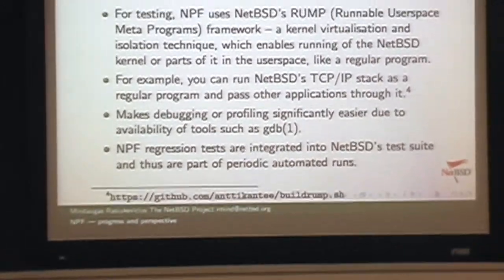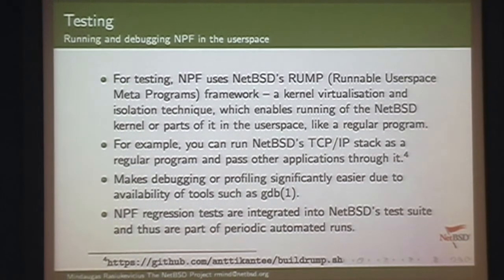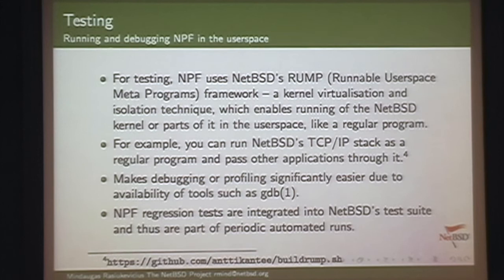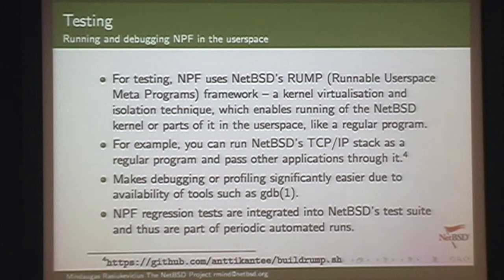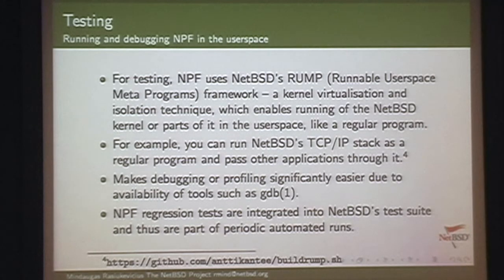For testing, NPF uses Rump — Runnable Userspace Meta Programs. It basically allows us to run the NetBSD kernel as a regular program: a simple binary you run. You can GDB it, trace it — it's just a program. You can also run it not only on NetBSD, but compile the kernel and run it on Linux, FreeBSD, and others. Debugging, profiling, and testing become much easier. NPF has regression tests integrated into NetBSD's test suite that run continuously — if you change something and break something, you get an email. There are tests for every NPF subsystem available via a small test program.